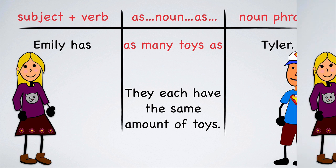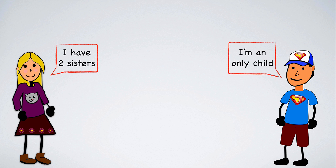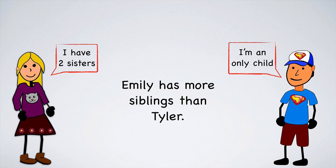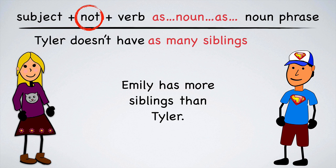What a coincidence. They each have the same amount of toys. To write the comparison, we'll say Emily has as many toys as Tyler. Emily, let me ask you another question: how many siblings do you have? I have two sisters. And Tyler, how many siblings do you have? I don't have any siblings. Emily has more siblings than Tyler. Now let's write the comparison. Remember, because this is a comparison of inequality, we will have to make it negative. Tyler doesn't have as many siblings as Emily.